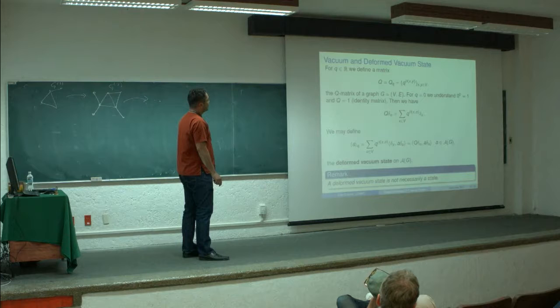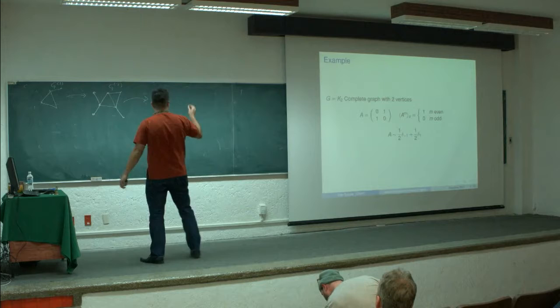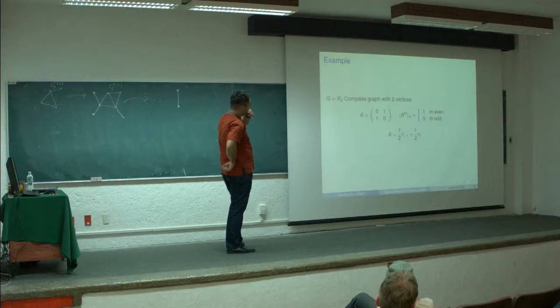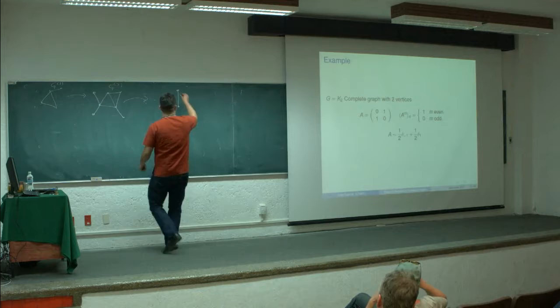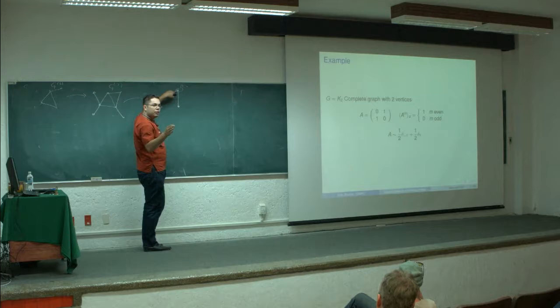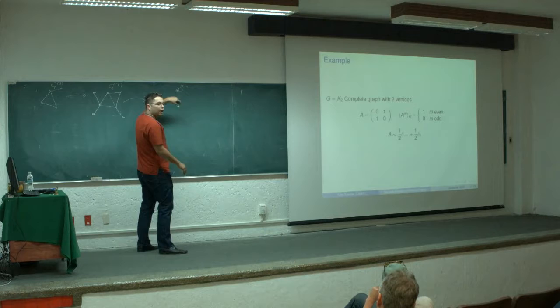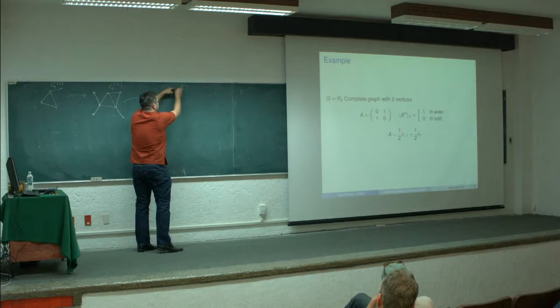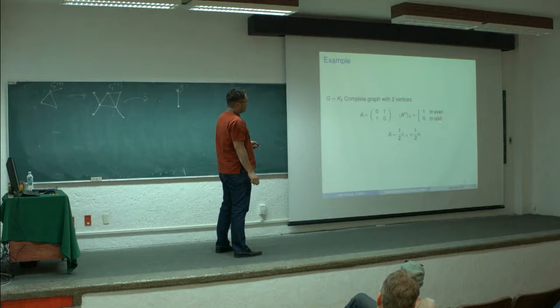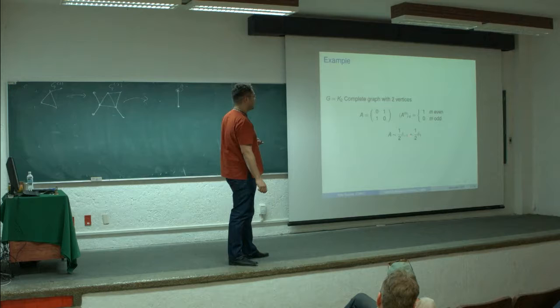As an example, if we have the complete graph with two vertices, we look at the adjacency matrix defined by this. We want to calculate the moments of order M. We are only counting closed walks from the origin to itself. If M equals 1, we have no walks because there are no loops. If M equals 2, we have exactly 1, because we can go to the other vertex and come back. The same situation holds for even numbers, while odd moments are 0. We want to associate a measure with odd moments equal to 0 and even moments equal to 1 — we know this is the symmetric Bernoulli distribution.